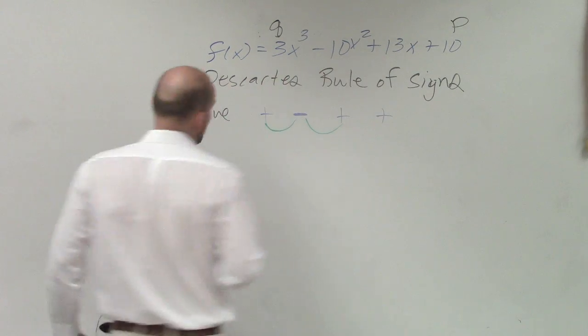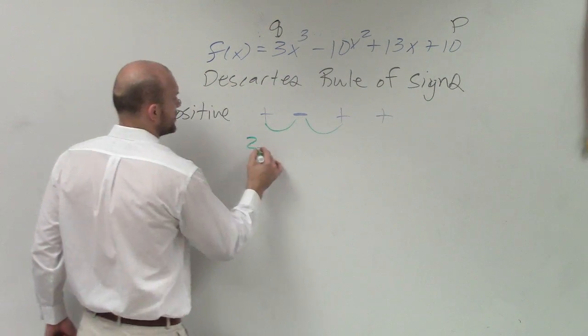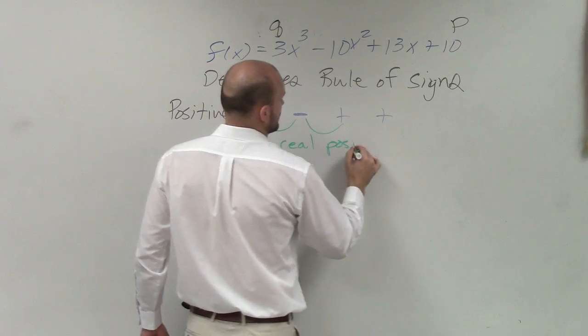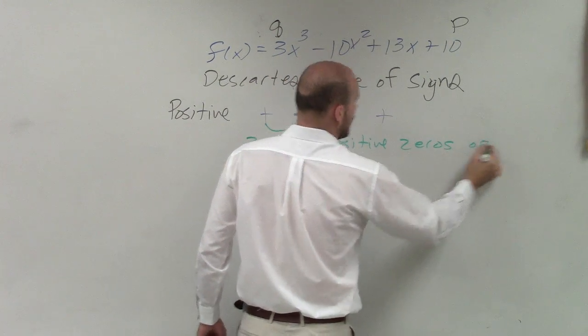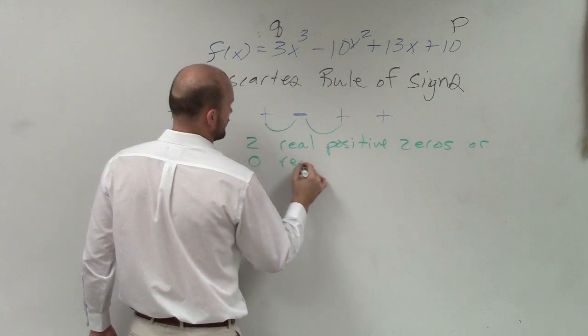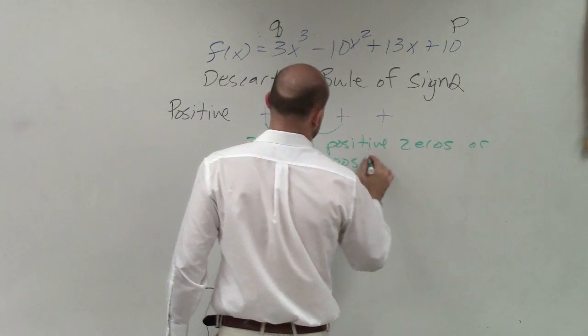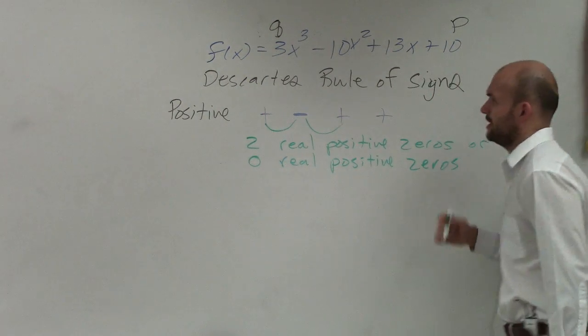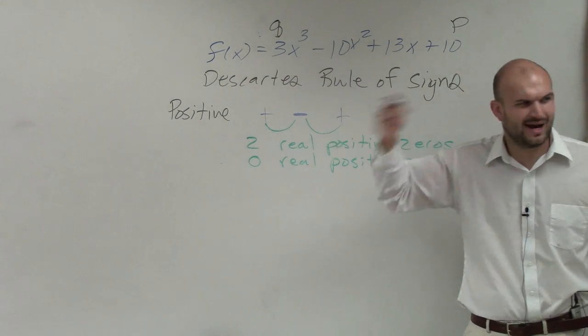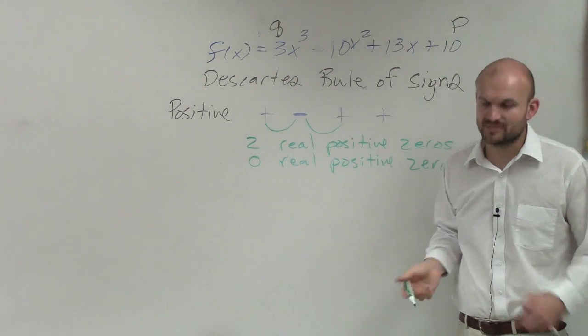Therefore, the number of positive real zeros - you're going to have two real positive zeros or zero real positive zeros. Some of you might say, wait a minute, I understand getting the two, but why is it possible also for it to be zero?